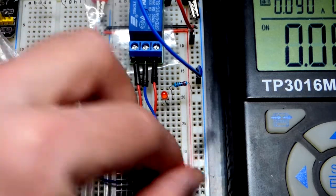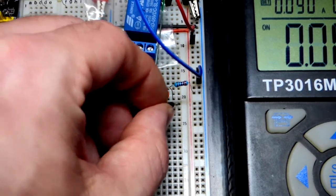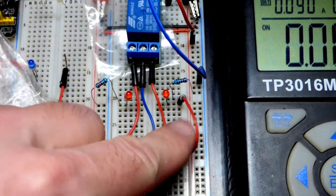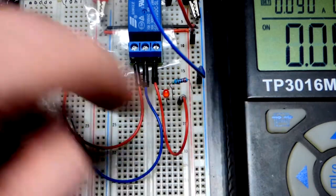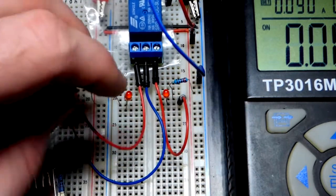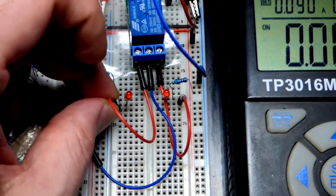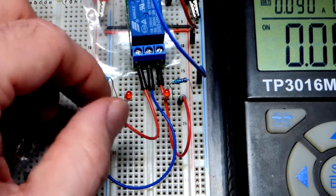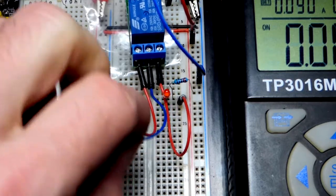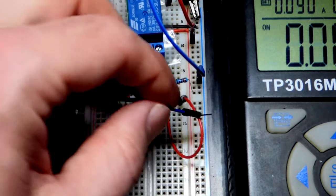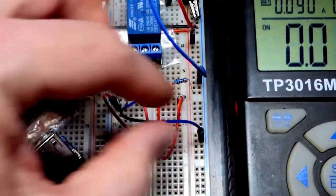We'll connect that red jumper there, that's one side of the switch, the normally closed switch, so that LED will be on when the coil is not energized. Then we will connect this jumper, the normally open switch, to that LED. One or the other is going to complete its circuit through the blue jumper depending on the switch position.